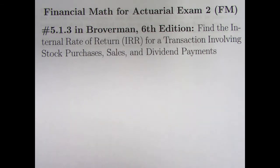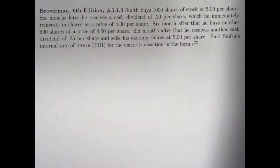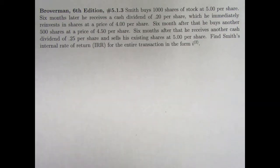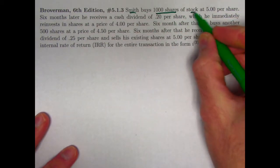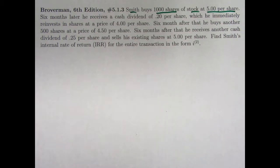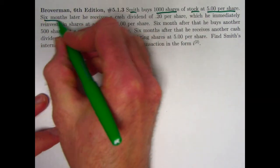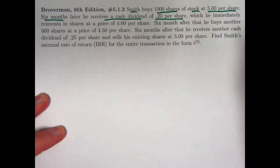We're doing Problem 5.1.3, finding the Internal Rate of Return (IRR), which is really effectively a yield rate for more general transactions, not just involving bonds but also, in this case, involving stocks. It's a simplified version of an example in Broverman's book where commissions are also paid. Here we get rid of the commissions.